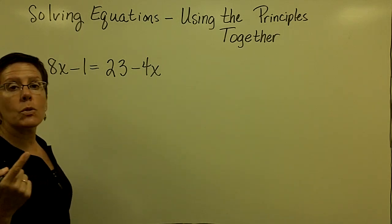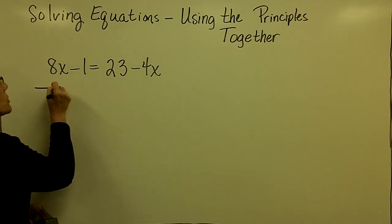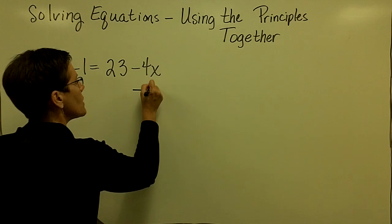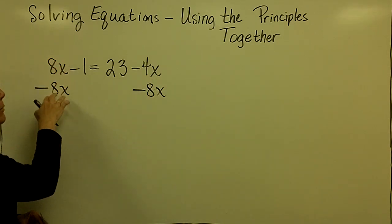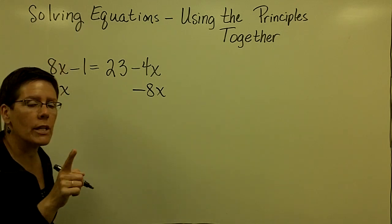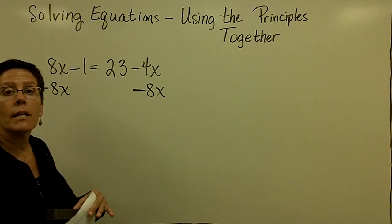Another one of my options right now is to work on the terms that have variables. If I would like, I could subtract 8x from both sides right now. I'm always trying to get the variable term on one side and a constant on the other.